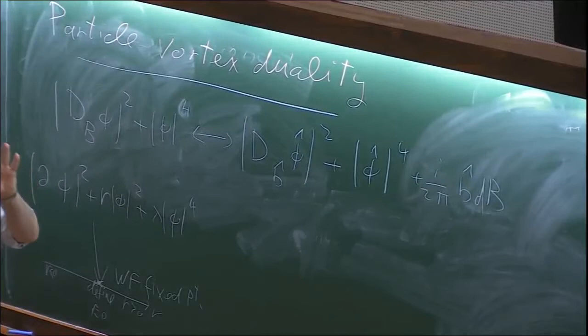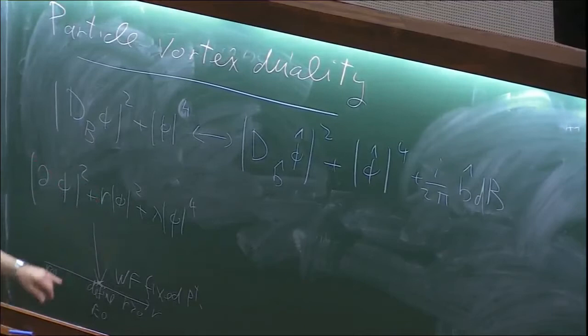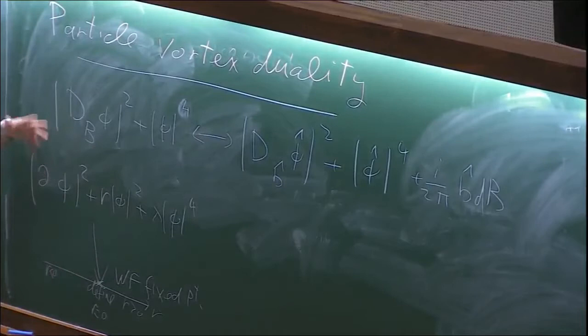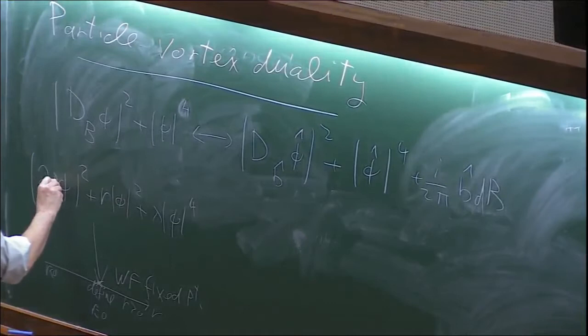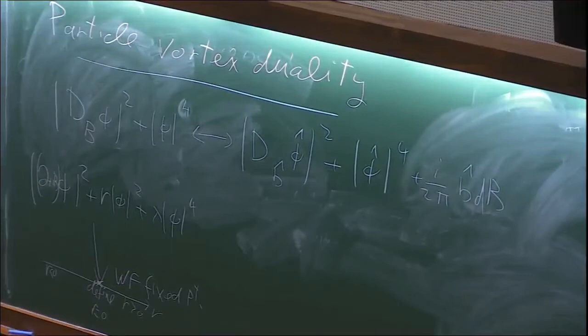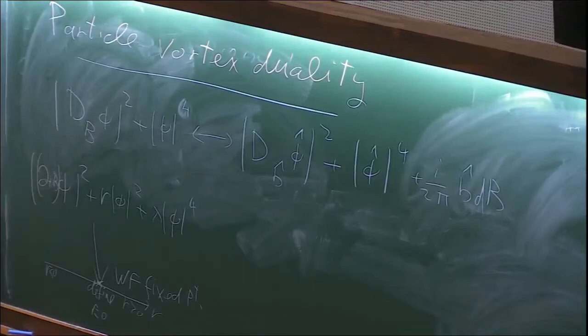I'll symbolically denote it without the quartic term, with coefficient r=1, to denote the fact that we are already in the infrared and there's no dependence on lambda. What appears on the left-hand side is shorthand notation for the theory at the fixed point. This theory has a global U1 symmetry — hence the name O2. It actually has an O2 symmetry because there's also charge conjugation. Under that, phi rotates by a phase. As such we can add a background field — that's what we wrote. So the left-hand side means the Wilson-Fisher theory at the fixed point coupled to a background U1 gauge field B which couples to this global U1 symmetry.